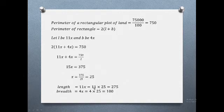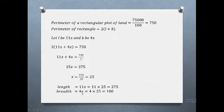So the length is 11x equals 11 times 25, which equals 275. The breadth is 4x equals 4 times 25, which equals 200.